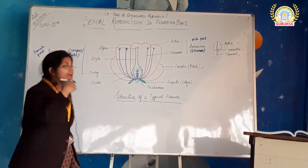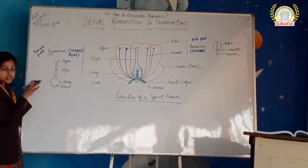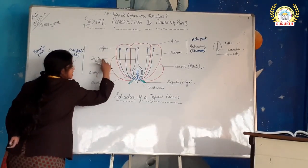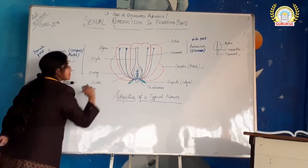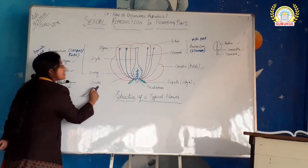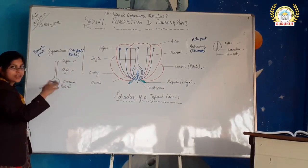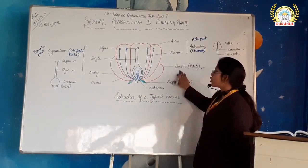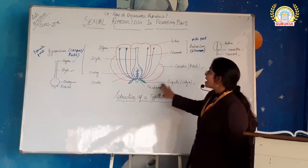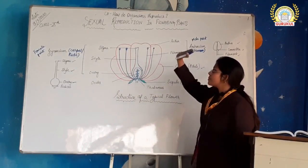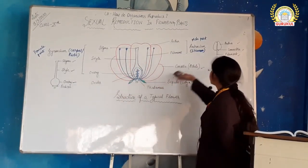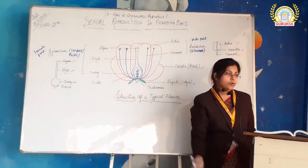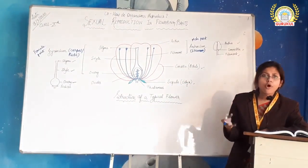Now let us see the structure of gynoecium. Gynoecium consists of stigma, style, and ovary. This is the stigma, this part is the style, and this circular part is the ovary. Inside the ovary there lie the ovules. So to recapitulate: a typical flower consists of corolla, sepals or calyx, then gynoecium and androecium. Gynoecium has three parts — stigma, style, ovary — and androecium has anther and filament, connected by a connective.